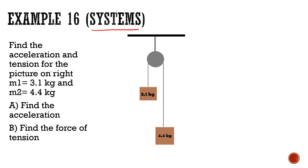Find acceleration and tension for the picture on the right. M1 is 3.1 kg and M2 is 4.4 kg. First, find the tension. So let's look at this problem. What I'm first going to do is draw a free-body diagram for both of these.